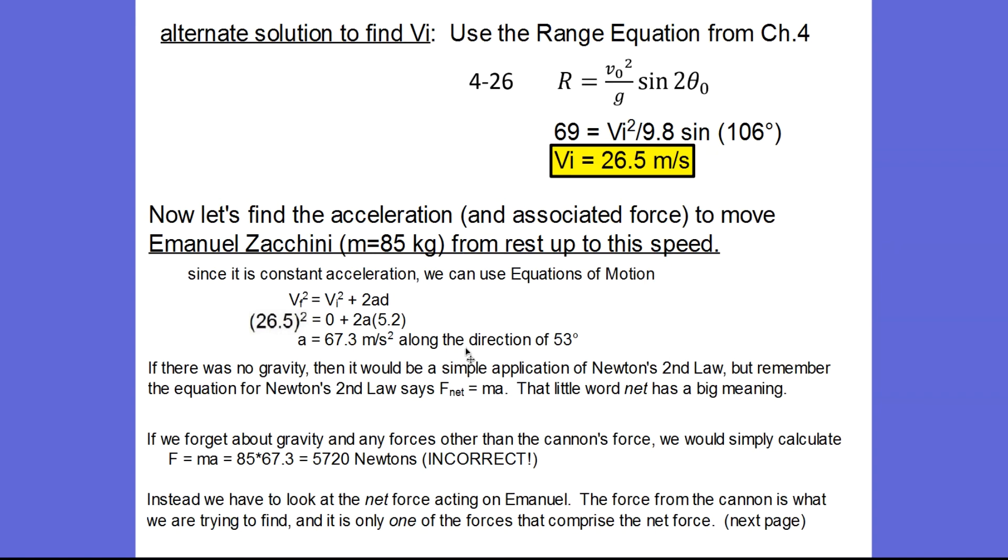Keep in mind that is along the direction of 53 degrees. Now if there was no gravity, it would be a very simple application of Newton's second law, just finding out the force needed to accelerate mass 85 kilograms with an acceleration of 67.3. So just calculating that 85 times 67.3 gives us a force of 5720 or 5,720 newtons. This is not correct. Why is this wrong?